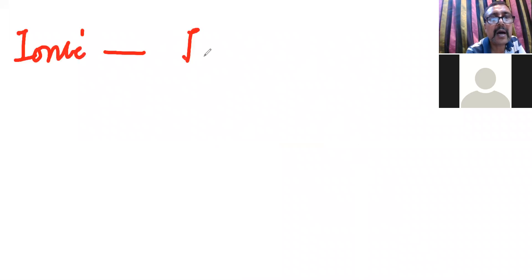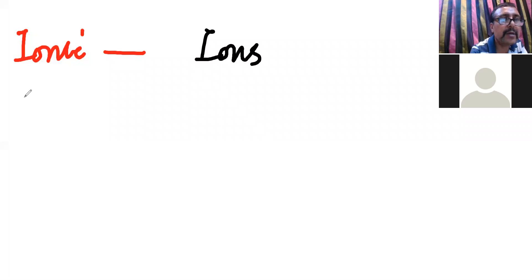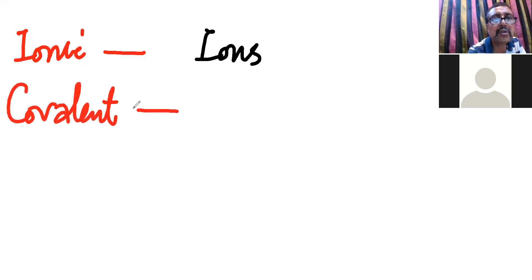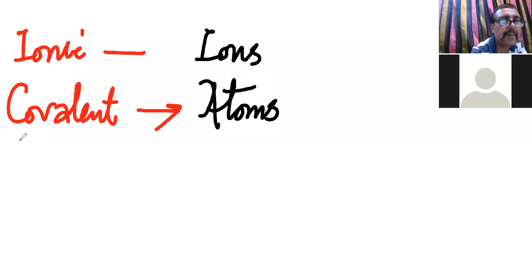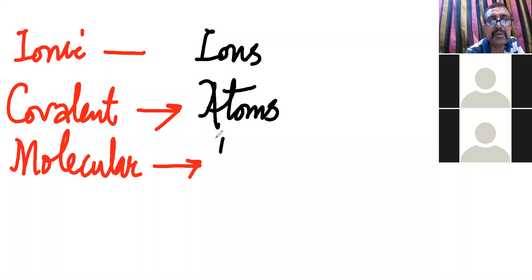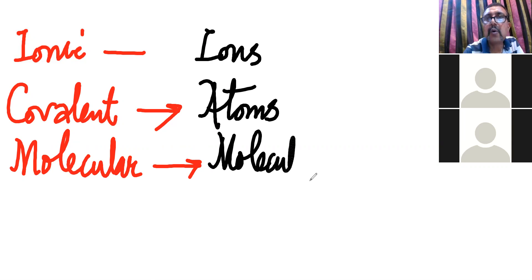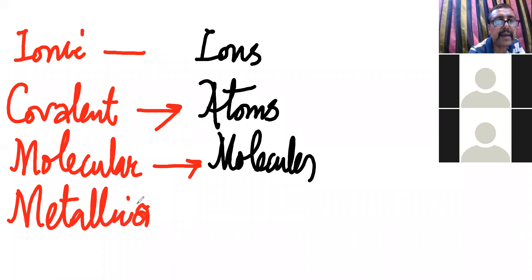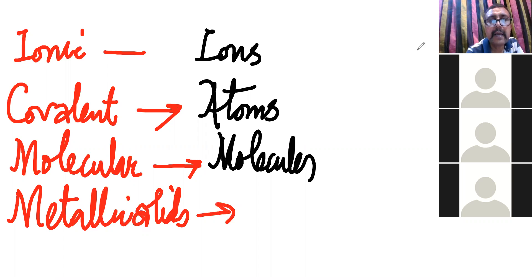Let's recap carefully: in ionic solids the constituent particles are ions; in covalent solids the constituent particles are atoms; in molecular solids the constituent particles are molecules; and in metallic solids the constituent particles are kernels.